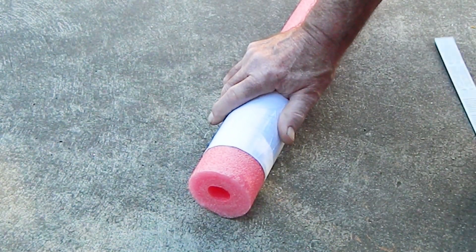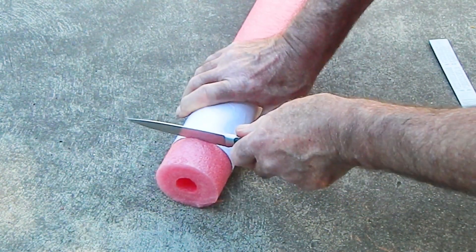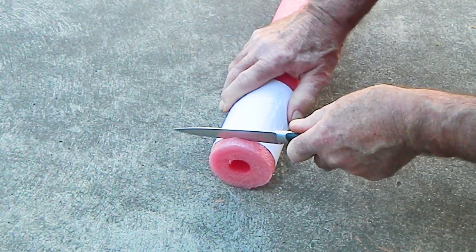Using the pool noodle and a sharp knife, cut the 40mm lower float and the 15mm upper float.